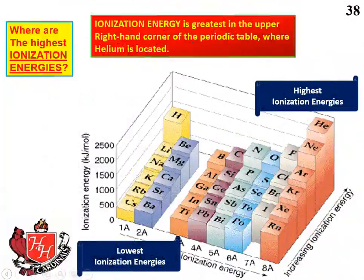This next illustration is a perspective view of the periodic table. It doesn't show all of the elements, but you can see that the highest step there is helium — that's where the highest ionization energy is. Helium is the most difficult to pull an electron away from of all the elements. The element in the lower left is the easiest; it has the lowest ionization energy. Ionization energy is greatest in the upper right-hand corner of the periodic table, where helium is located.